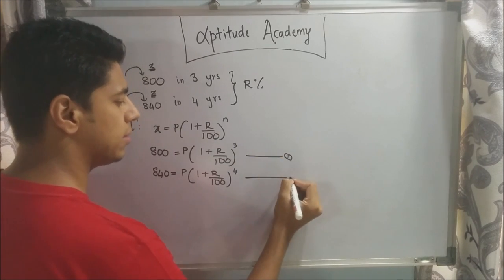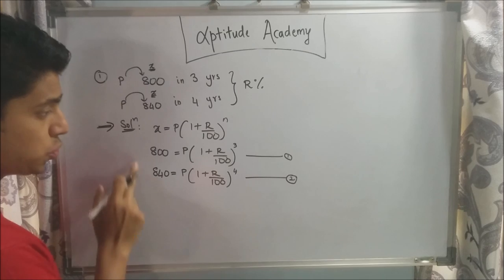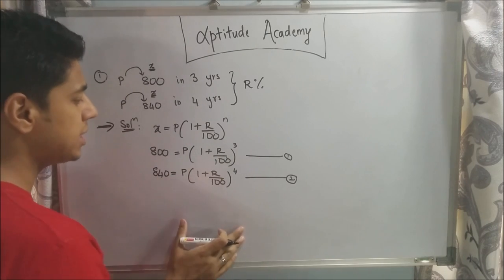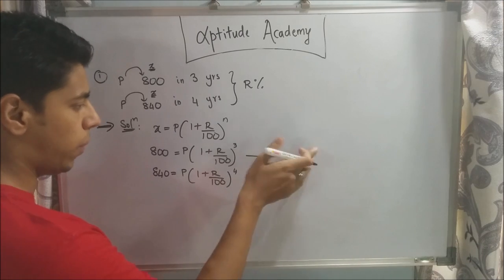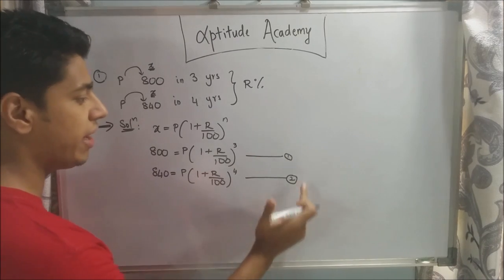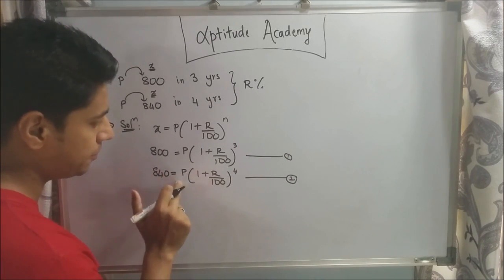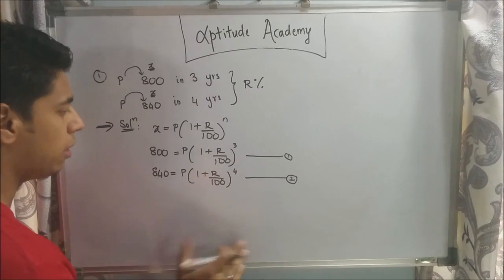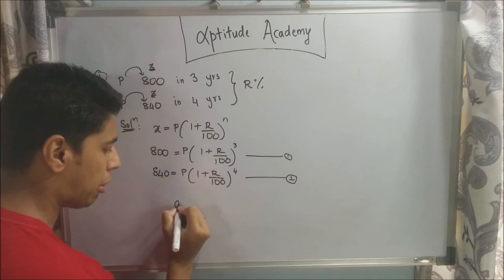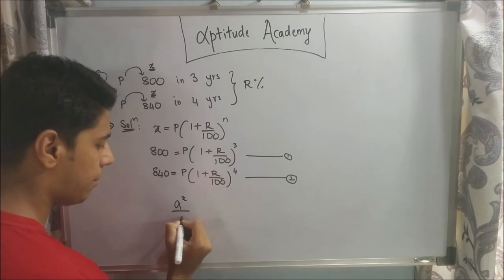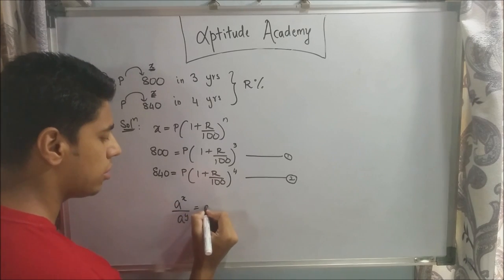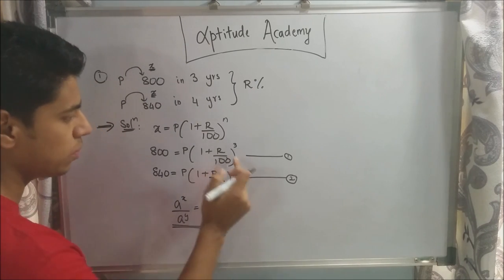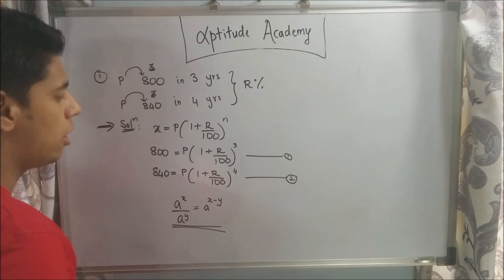We call these equation 1 and equation 2. We have two equations with two unknowns: P and R. We divide equation 2 by equation 1 to eliminate P. We need the property: A^X / A^Y = A^(X−Y), which we will use in this simplification.